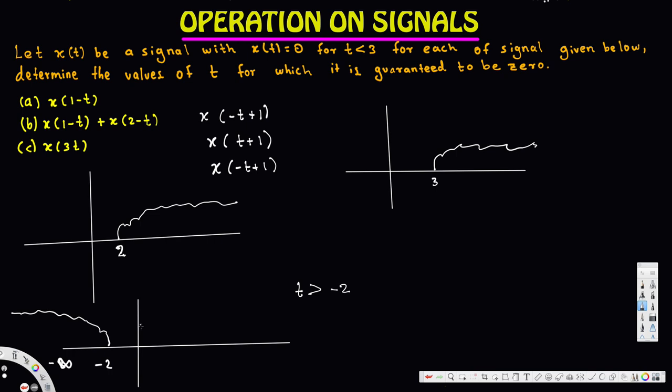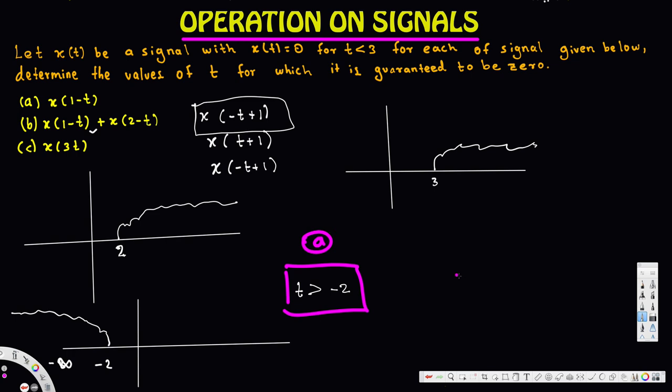Now let's look at the next expression. x(1-t) is the same as x(-t+1), which we just found. Now if we add this with x(2-t), what's going to be the interval where we get zero? Let's find x(2-t). This is part A done, and now we move on to part B.